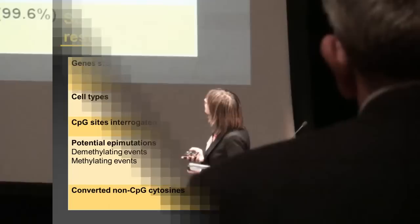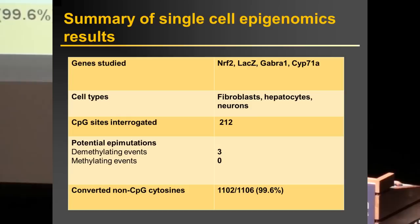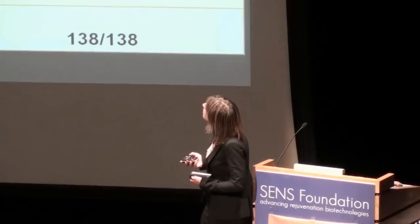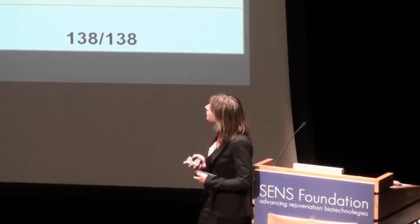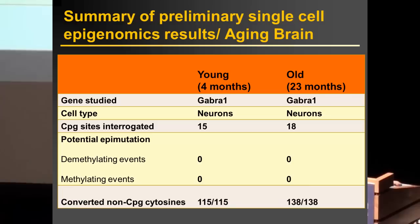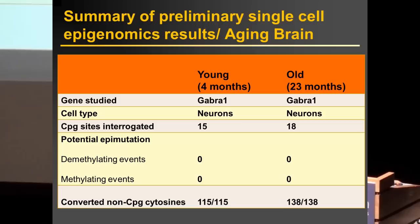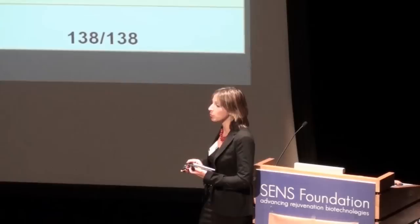We've done this in several cell types, targeting several promoters, and are extending to more promoter regions. Using this locus-specific approach, we were able to identify a few demethylating epimutations. The non-CpG cytosine conversion rates are almost 100%. We've started applying this to neuronal nuclei extracted from young and old mice. As preliminary data, targeting Gabra1 — a brain-specific gene that is highly expressed with a hypomethylated promoter — we didn't detect any epimutation events so far. Of course, we need to look at many more promoter regions and more animals, and we are performing this right now.